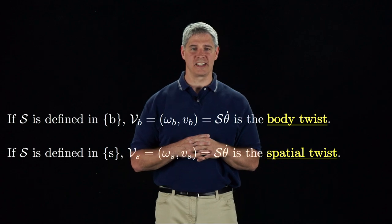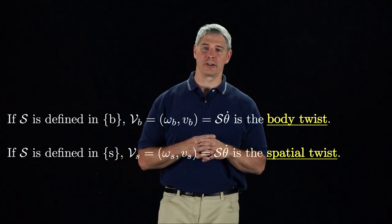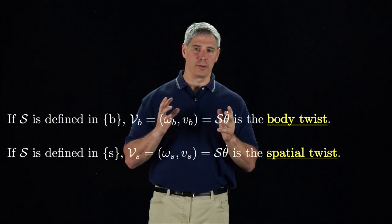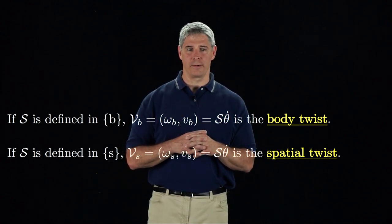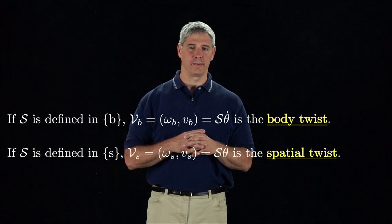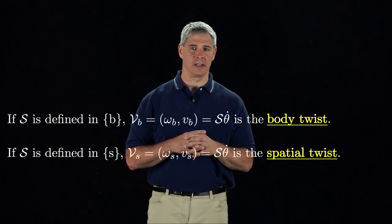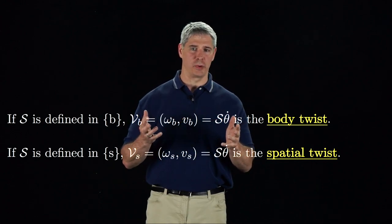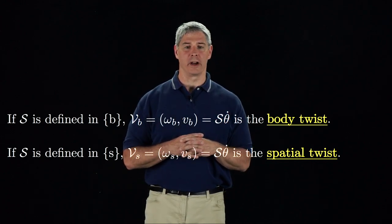In summary, a twist is a six-vector consisting of a three-vector expressing the angular velocity and a three-vector expressing the linear velocity. Both of these are written in coordinates of the same frame, and the linear velocity refers to the linear velocity of a point at the origin of that frame. Both the body twist and the spatial twist represent the same motion, just in different coordinate frames.